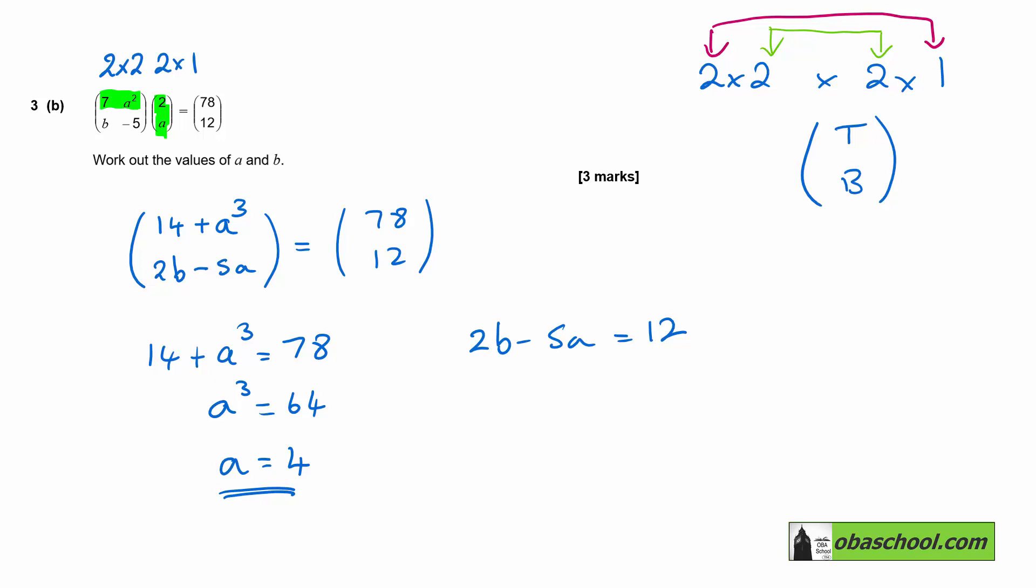Taking the value of four over to the other equation, we get 2b take away 20 is equal to 12. Add 20 to both sides, 2b is equal to 32. Divide both sides by two, and b is equal to 16.